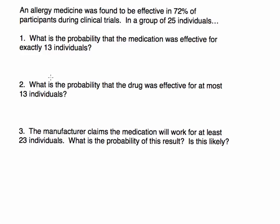In this video, we're going to go over an example of the binomial distribution where we're actually going to be calculating some probabilities. We are told that an allergy medicine was found to be effective in 72% of participants during clinical trials. In a group of 25 individuals, what we want to know first is what's the probability that the medication was effective for exactly 13 individuals.